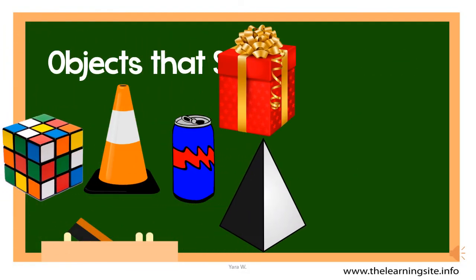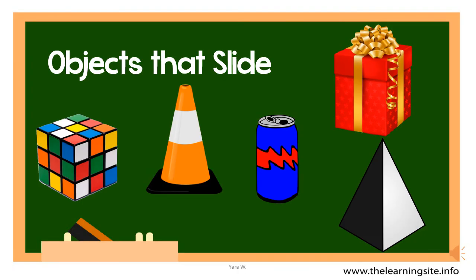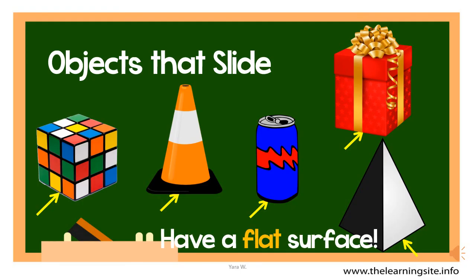Look at those objects that slide. As we said, the only surface that will touch the ground is the bottom surface. Look at all of these objects — do you notice a common thing about the bottom surface? All those objects have a flat bottom surface. So to slide, the object needs to have at least one flat surface. Now, all flat surfaces can slide.